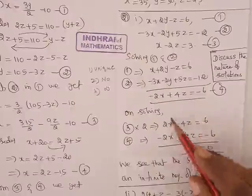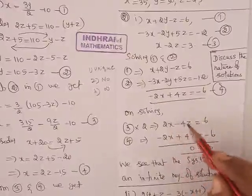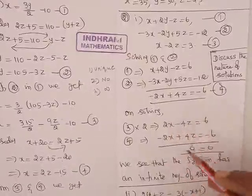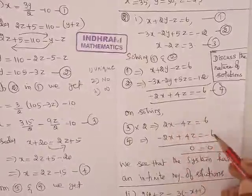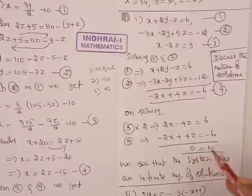Now you add it, these two get cancelled. Minus 4z, plus 4z get cancelled. So left hand side is 0, equal to 6 minus 6, that is equal to 0. So 0 equal to 0.